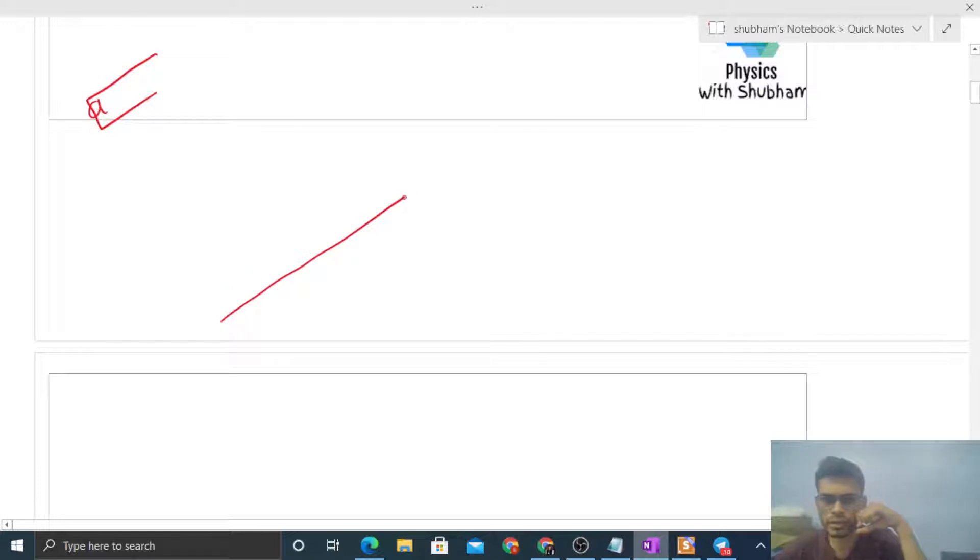This way we have a rough inclined surface. Let's say the angle of inclination is theta, and here we have a sphere that we release from rest.